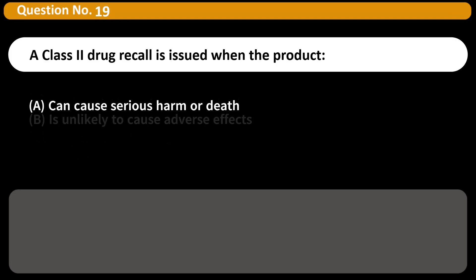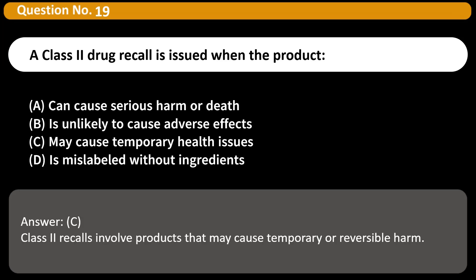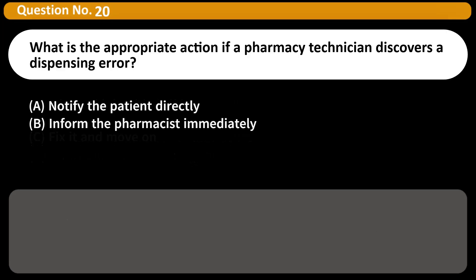A Class 2 drug recall is issued when the product: A. Can cause serious harm or death. B. Is unlikely to cause adverse effects. C. May cause temporary health issues. D. Is mislabeled without ingredients. Answer: C. Class 2 recalls involve products that may cause temporary or reversible harm.